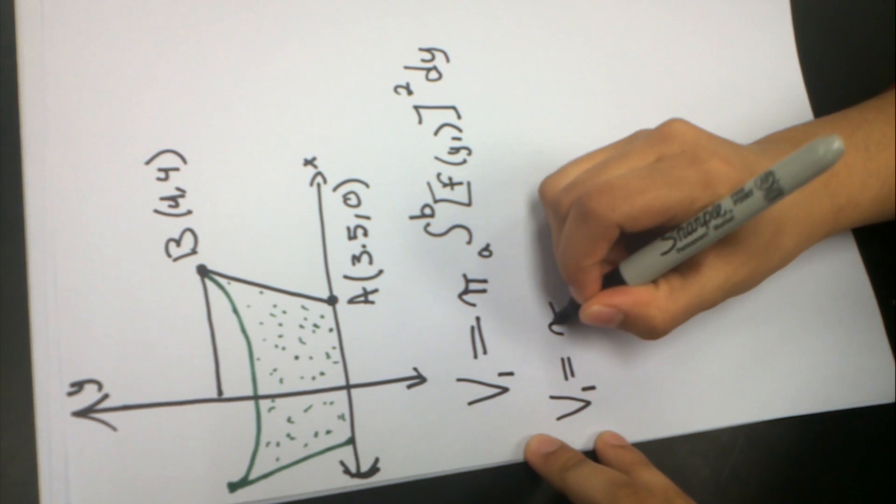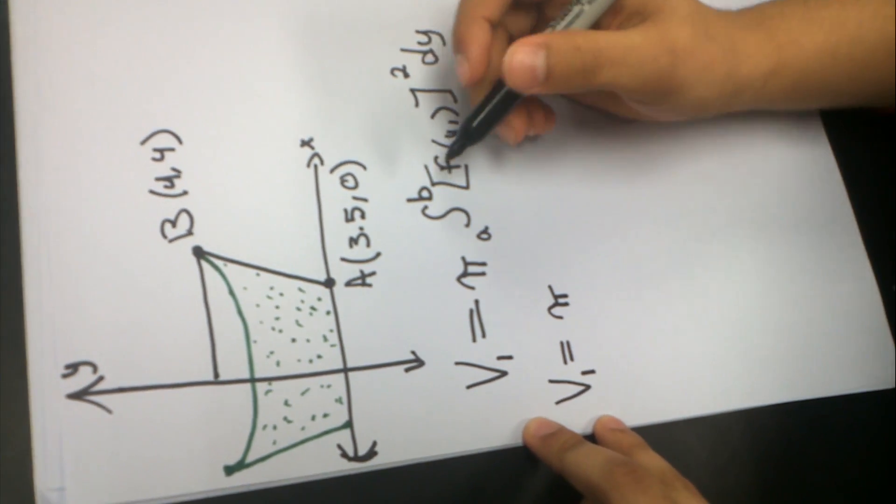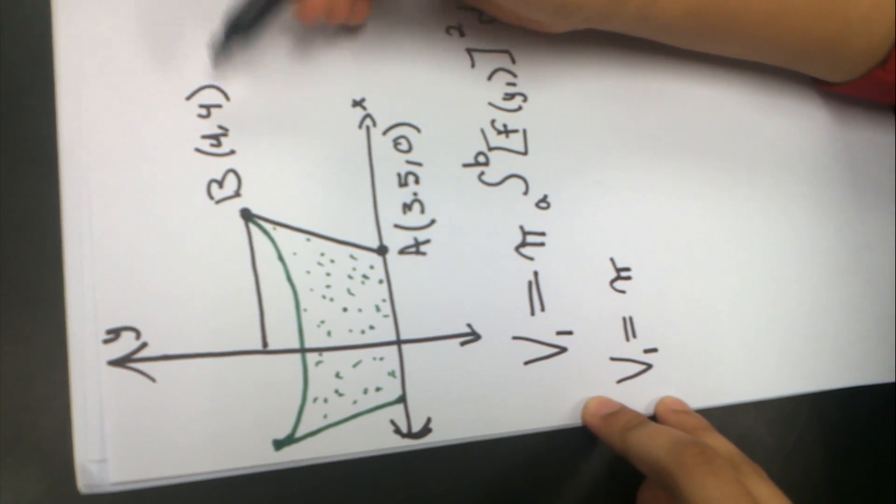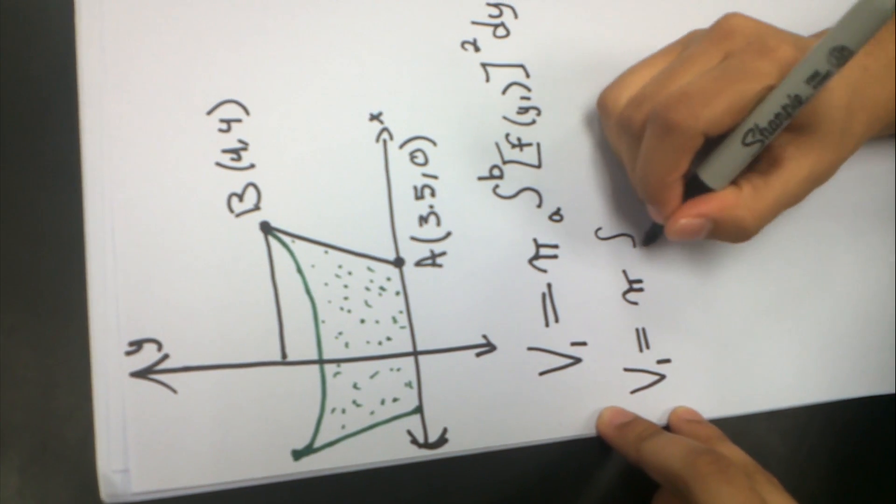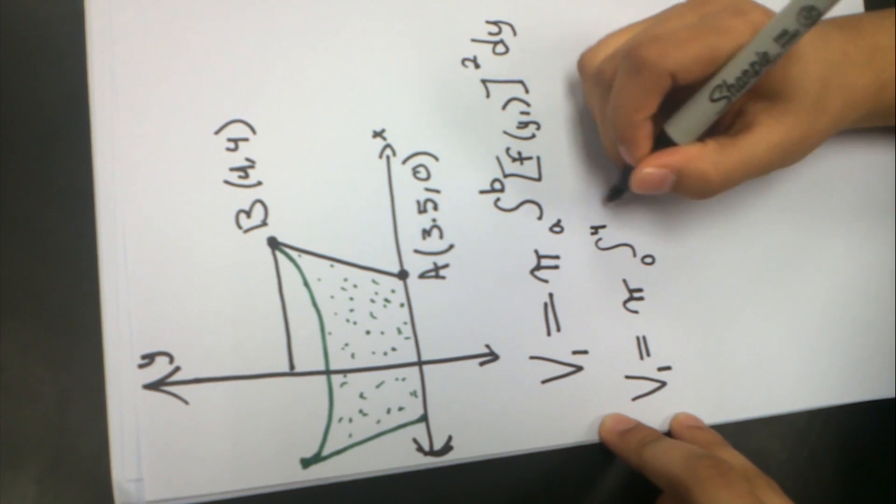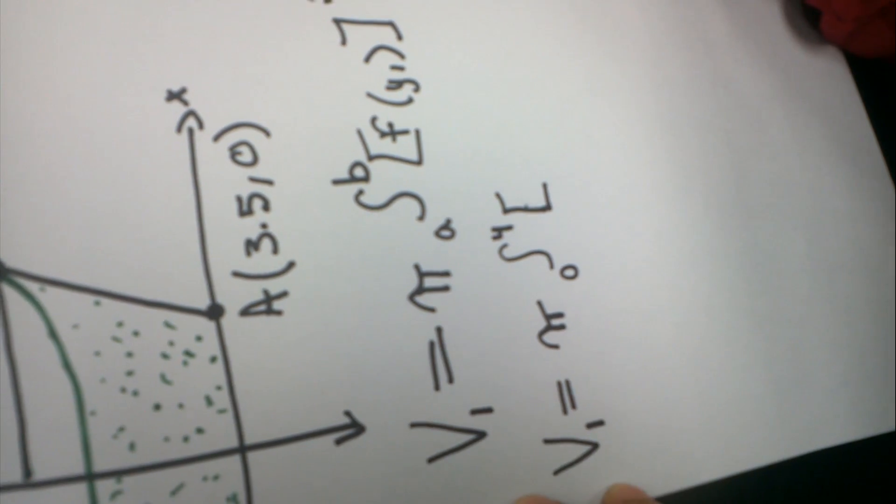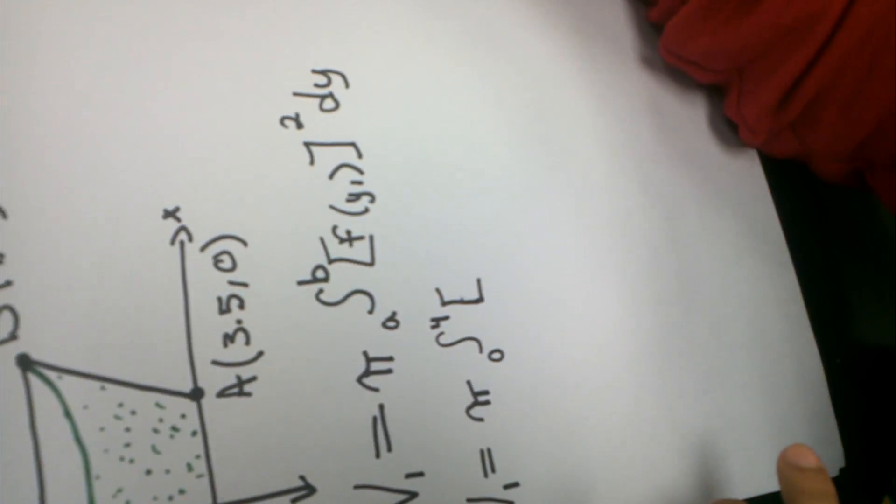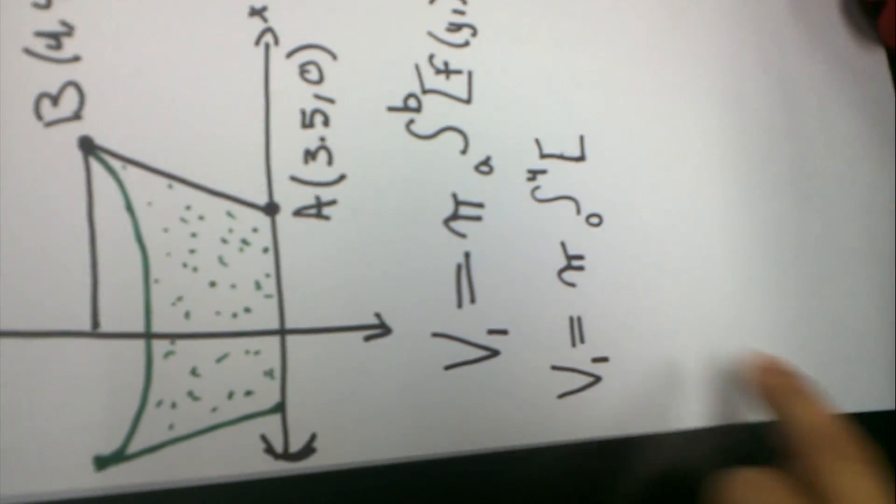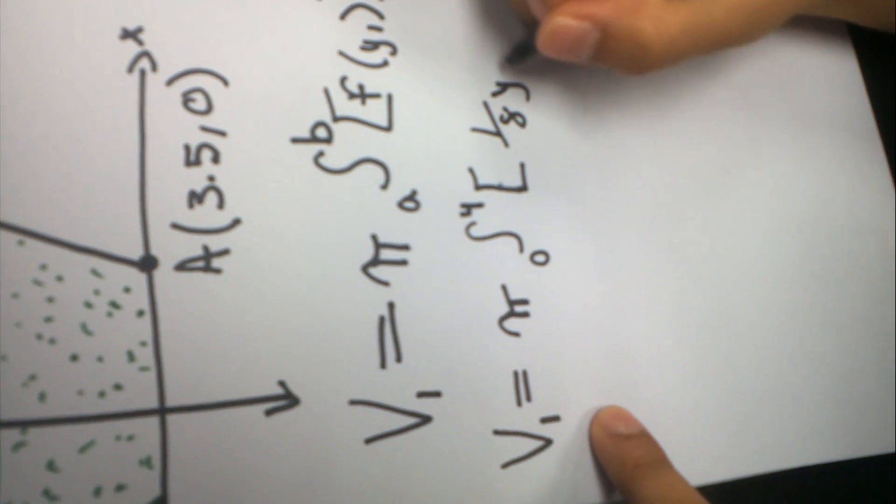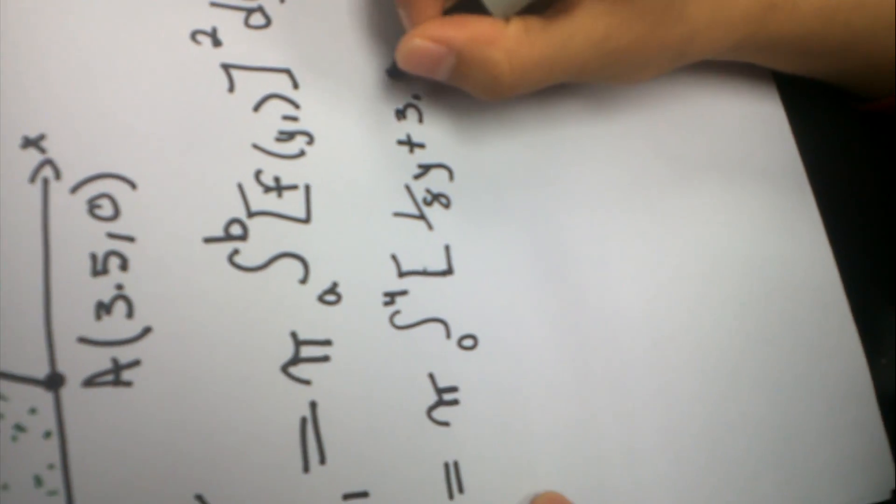V₁ = π. From A to B, because it's from point A to point B, but we're using the y's, which is from 0 to 4. F(y), which is y. F(y) is always equal to x, which is right here. I have this equation over here, and write that down: (⅛y + 3.5). Remember, it's all square, dy.